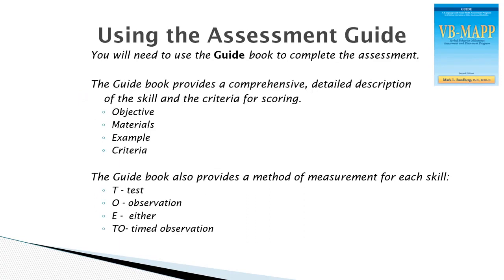The guidebook provides a comprehensive, detailed description of the skill you are testing and the criteria for scoring either a zero, half a point, or one point. You can pre-score any known items, but be careful of items that require a timed observation. For example, in level one, play skill two wants to assess whether the student shows variation in play by interacting with five different items during a 30-minute timed observation. To receive a full point, the student must play with five different items within that window. If the student only plays with three items, they receive a half a point. If the student plays with fewer than three items, they receive zero points.